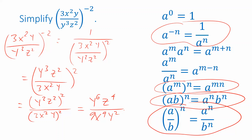Now there's one more thing we can do — simplify by canceling powers of y. Y squared is really y times y, and y to the sixth is six y's multiplied together. If we cancel two y's in the numerator with two y's in the denominator, we won't have to write any y's at all in the denominator — we'll just have 9x to the fourth there. Canceling those two factors of y leaves four factors of y in the numerator. And there's our simplified expression: y to the fourth over 9x to the fourth z to the fourth.